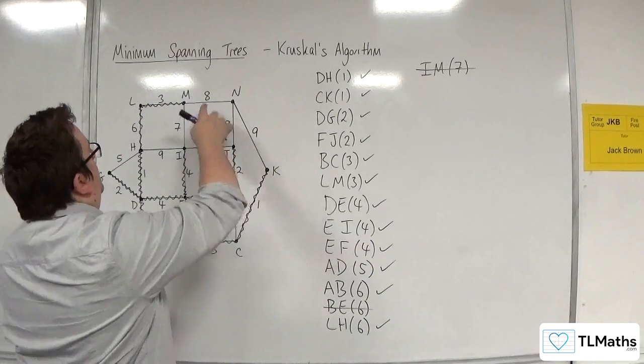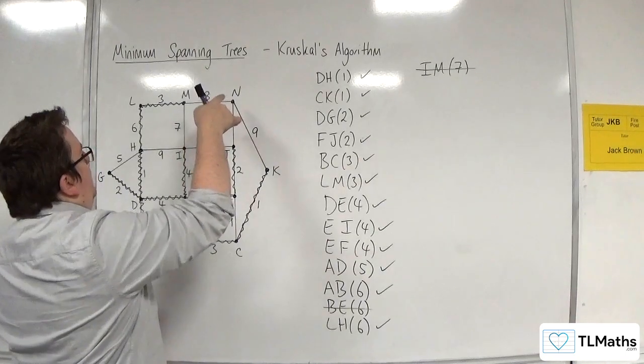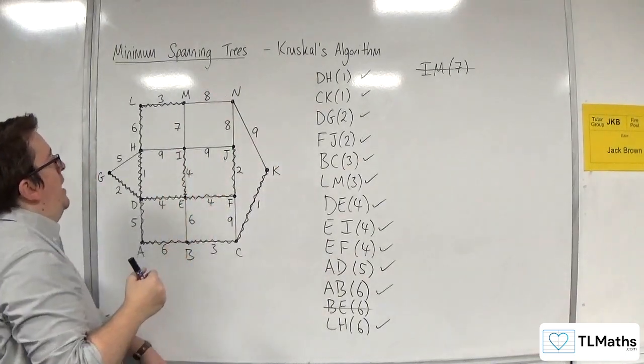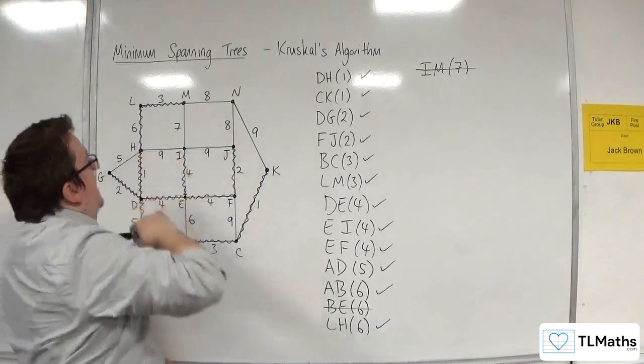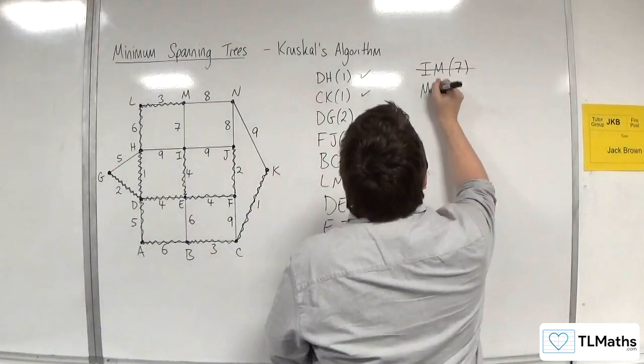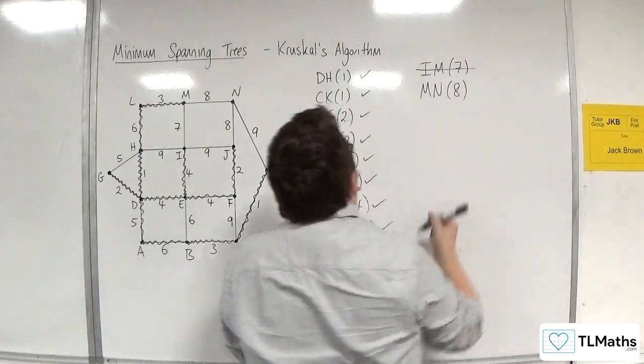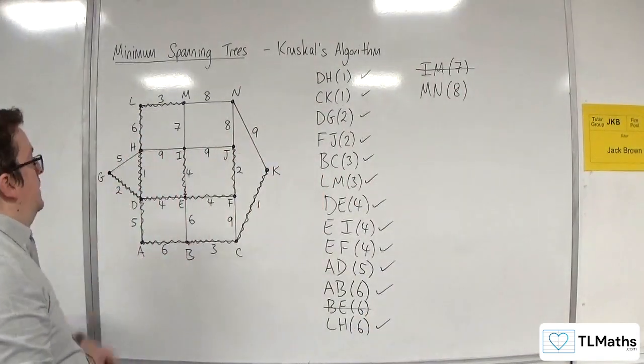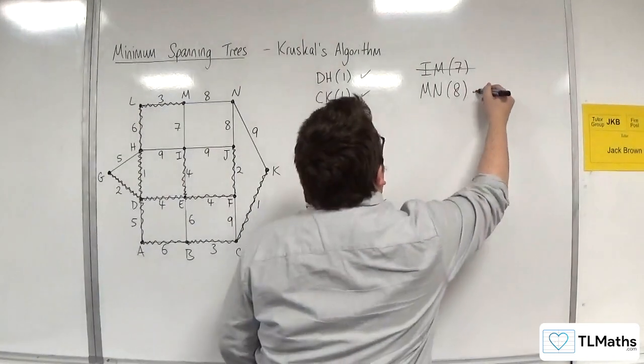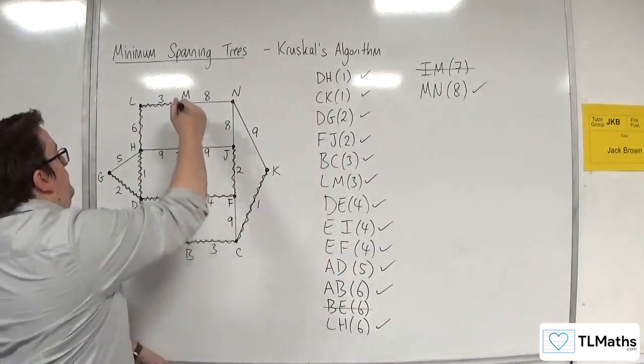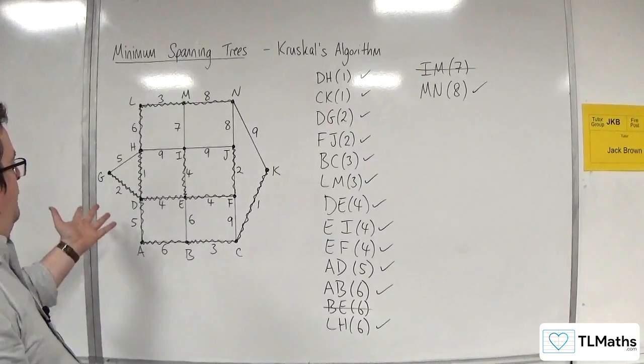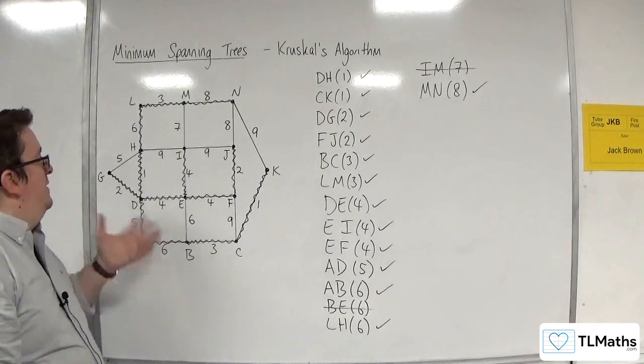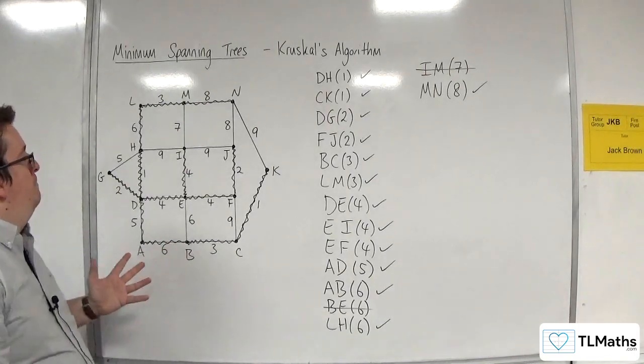And I can't see any more 7s. So we're going to go on to 8s. 8s, we've got MN, and we've got NJ, or JN. Now I could select either of those. I'm going to select MN with 8. That one's all good. I'll have that one. And now all of the vertices are connected. I don't need to go any further.